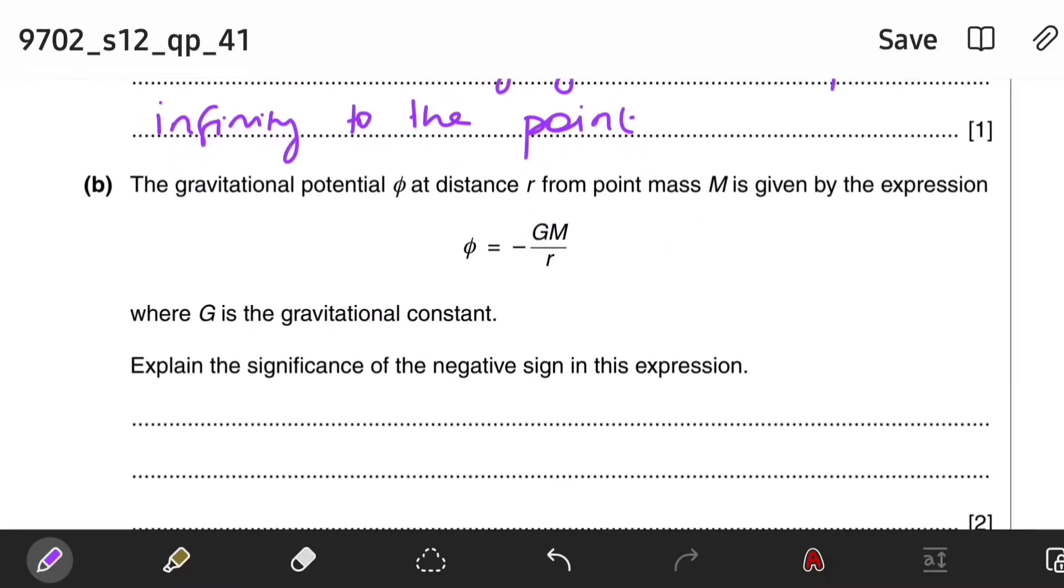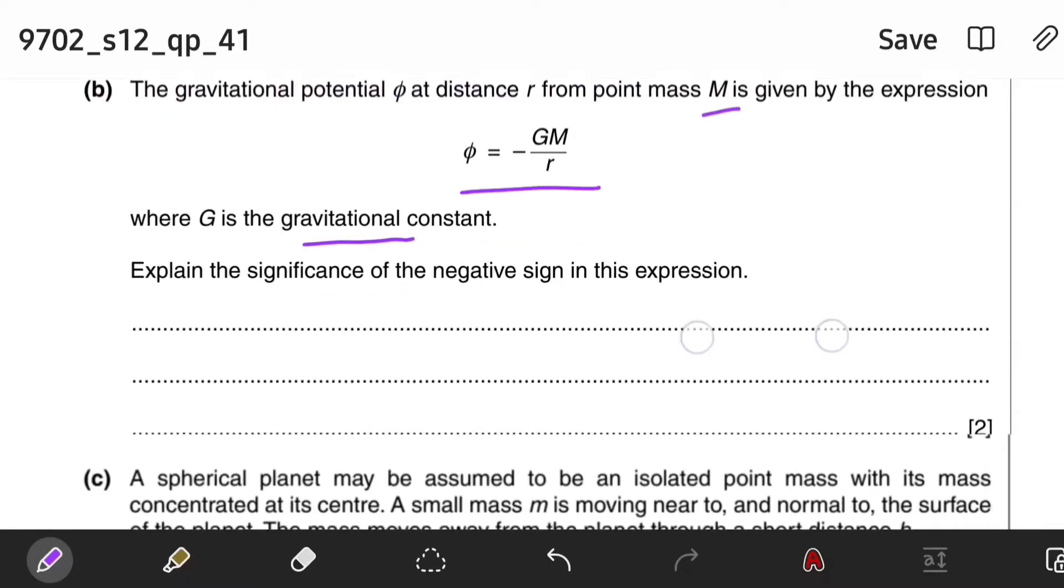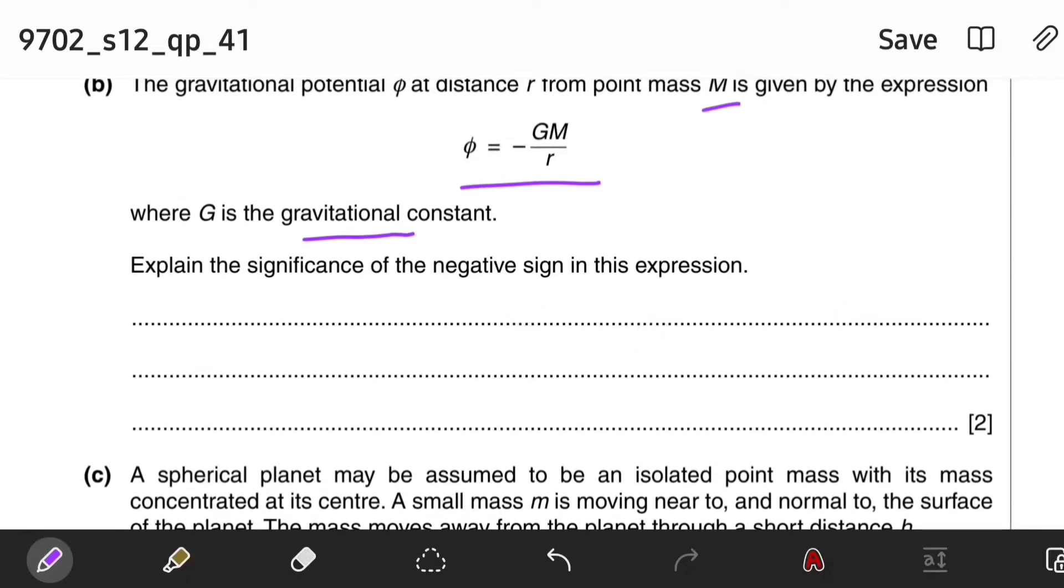Part B: The gravitational potential φ at distance r from point mass M is given by the expression φ = -GM/r, where G is the gravitational constant. Explain the significance of the negative sign in this expression. So we know that gravitational force is always an attractive force.